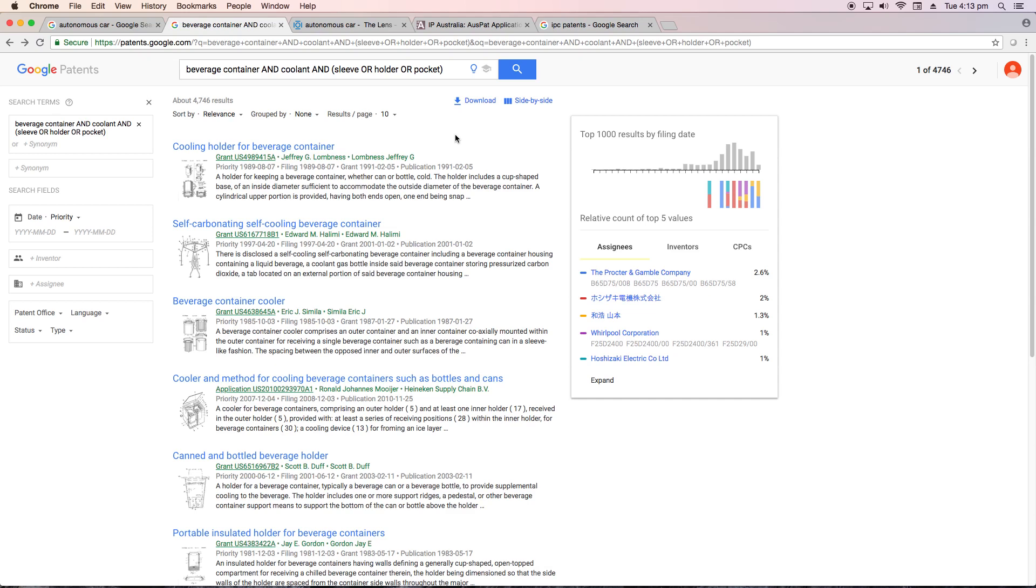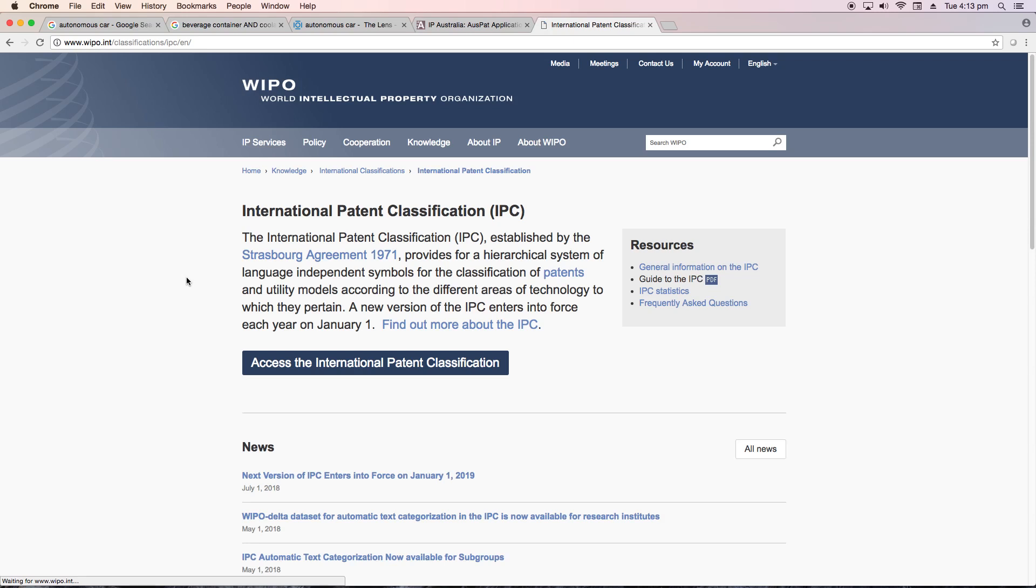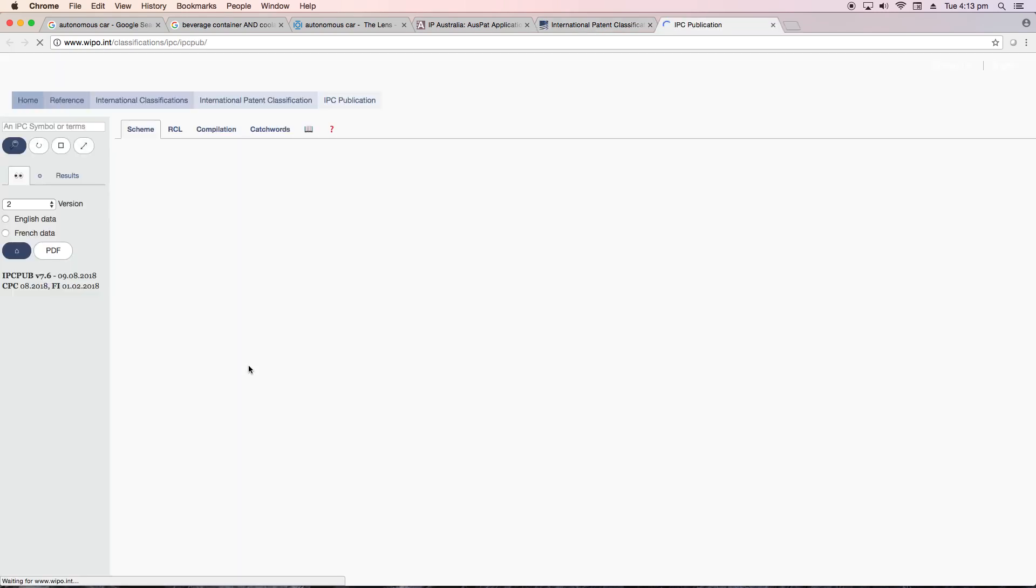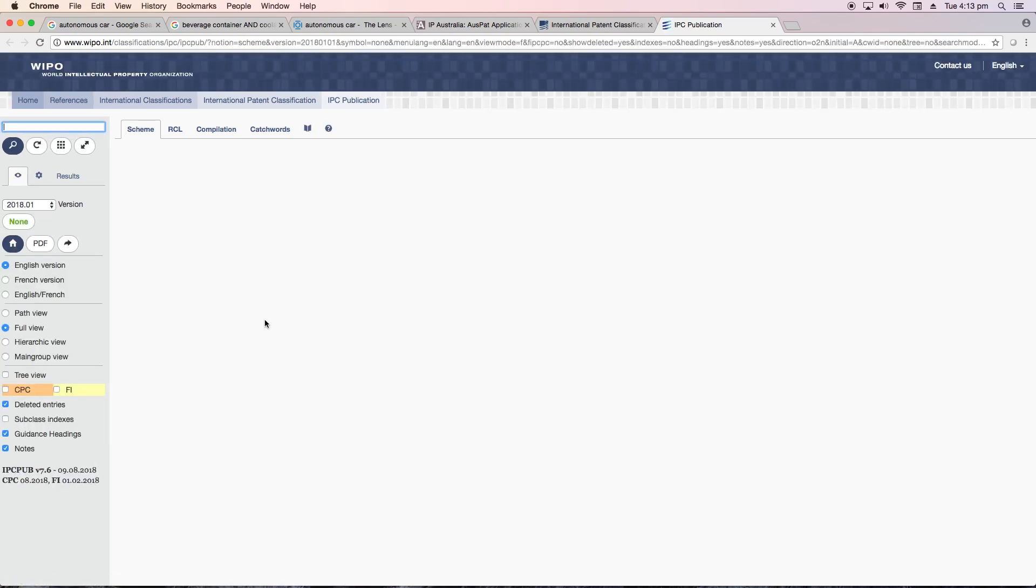In Australia, we use a scheme called the IPC, or International Patent Classification. If you go to Google and search IPC patents, you'll find more info. There's also a link below to info on WIPO's website. The IPC is an index of about 70,000 entries sorting patents into different areas of technology. By using the IPC reference, you can whittle down your results to those which are more relevant. And if you use it in conjunction with the synonyms we covered before, you should be able to find the results you're after.